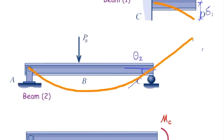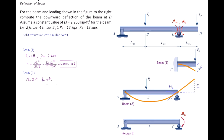Beam number two deforms as shown. We have learned that the slope of the beam at point C causes indirect deflection at point D on the cantilever part. So we need to first determine the slope, then determine the indirect deflection caused by that slope, which is called delta prime two.